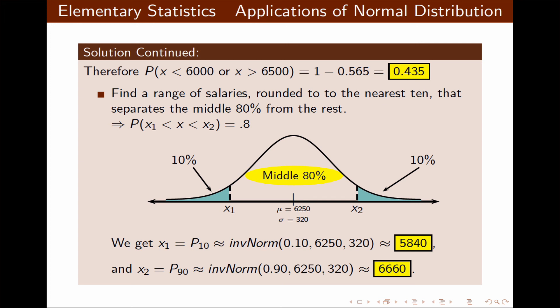10% make more than $6,660 a month, and 10% make below $5,840 a month. I hope this presentation helped you understand how to use normal probability distribution in some applications.